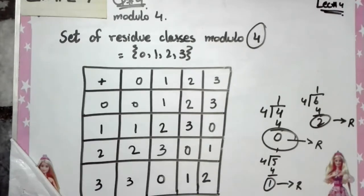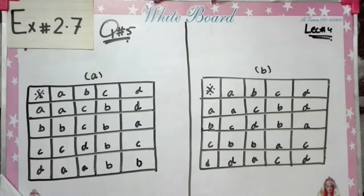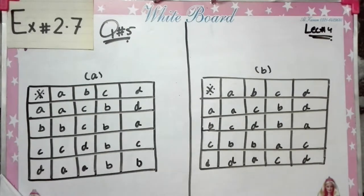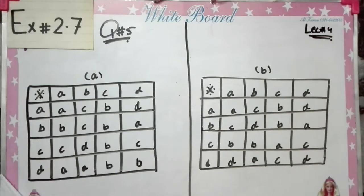This completes our question number 4. Now let's start with question number 5. Question number 5 asks: which of the following binary operations shown in table A or B is commutative? We have two tables and we need to determine which table holds the commutative property. Basically, commutative law holds for the table whose transpose and original table are equal.